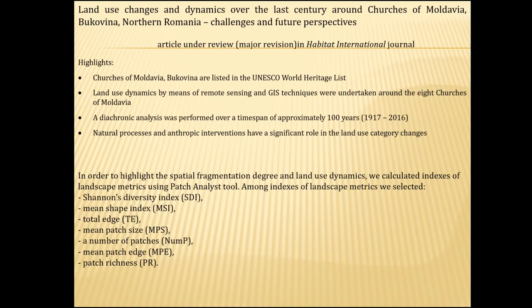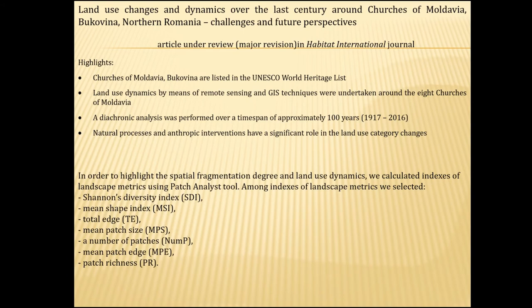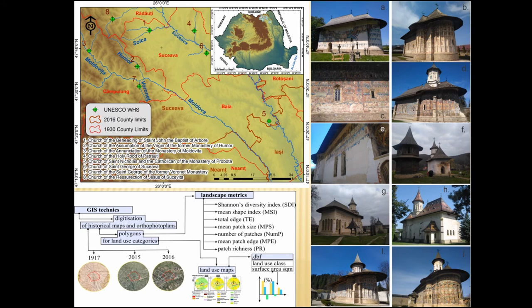The next work followed land use changes and dynamics over the last century around the churches of Moldavia-Bukovina in northern Romania. These churches are listed on the UNESCO World Heritage list. We used land use dynamics by means of remote sensing and GIS techniques, performing a diachronic analysis over a time span of approximately 100 years. We concluded that natural processes and anthropogenic interventions have a significant role in land use category changes. To highlight spatial fragmentation degree and land use dynamics, we calculated landscape metrics indexes using the Patch Analyst tool, including Shannon's diversity index, mean shape index, mean patch age, and patch richness.